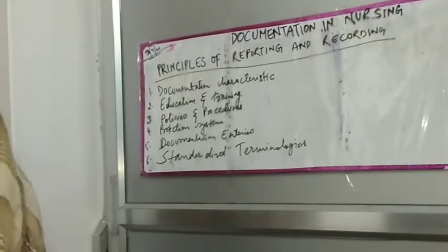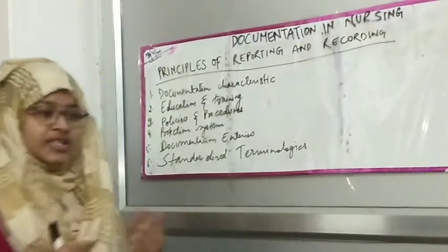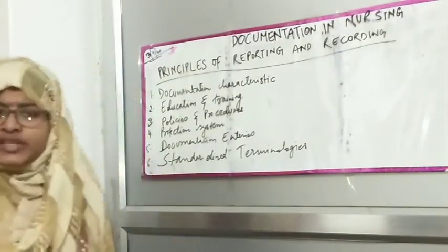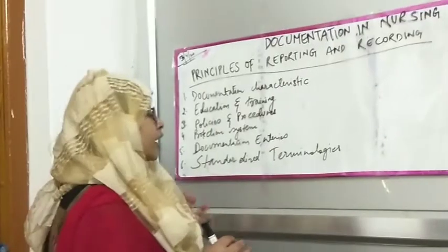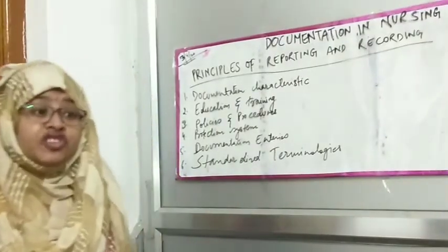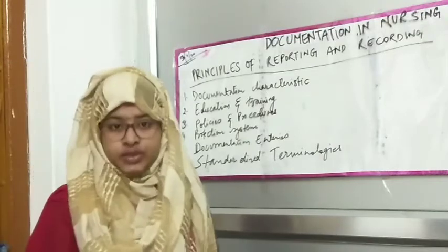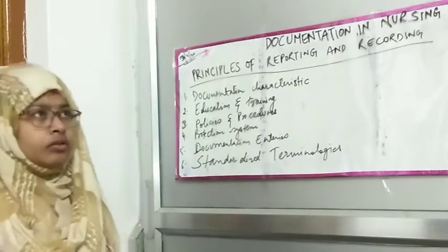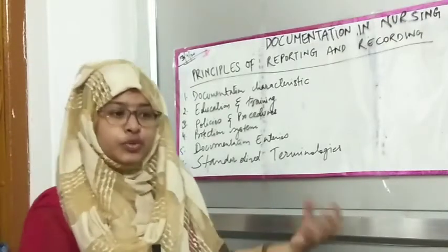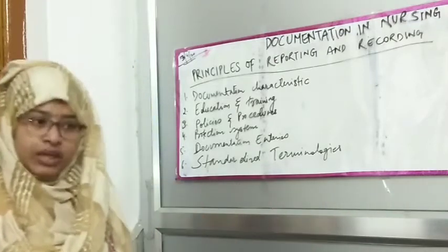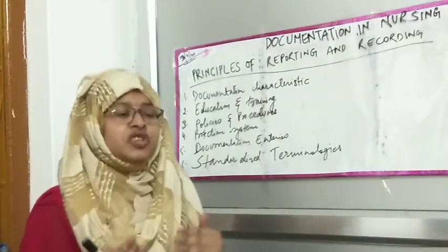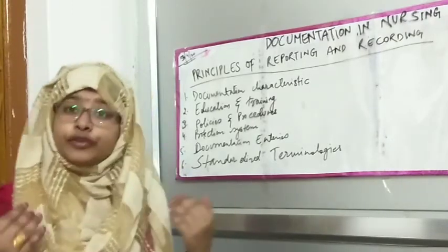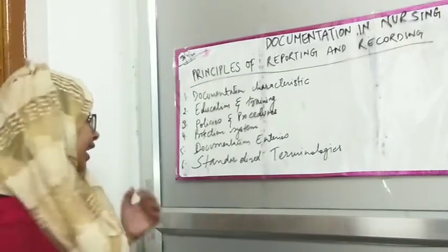The protection system means that whether your documents are in written form or computer-based, you will protect them. You do protection to prevent misuse. In addition, there are many diseases that the patient doesn't want others to know about, so you protect the patient's identification. This is the protection system.